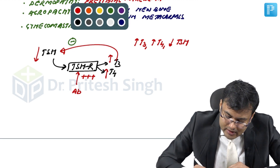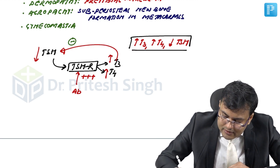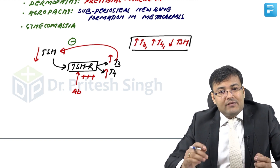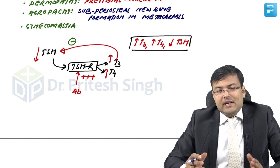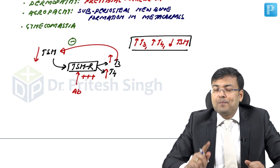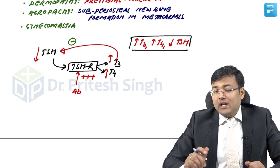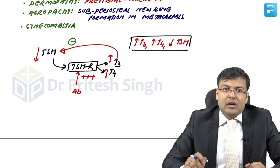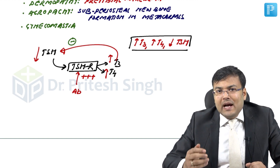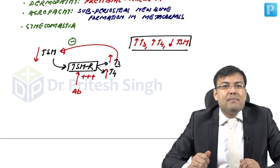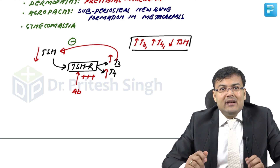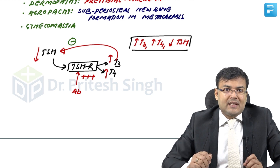The thyroid gland is hyperactive, leading to increased secretion of T3 and T4, causing signs and symptoms of hyperthyroidism. Additionally, patients have signs and symptoms of sympathetic stimulation because in hyperthyroidism there is increased expression of beta receptors.